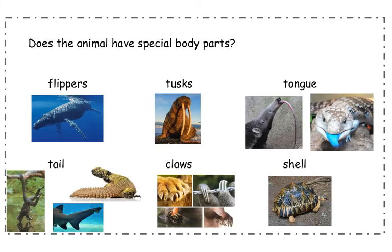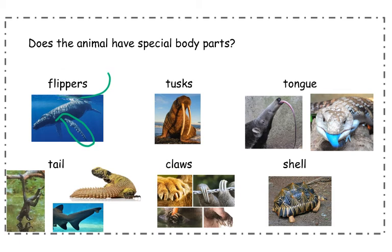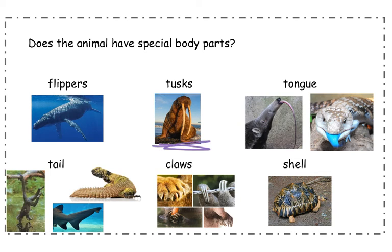Here are some more examples of special body parts. Flippers — some animals have flippers, also called fins. On a penguin they would be called flippers; on a whale they would typically be called fins. They are used for swimming. Some animals have tusks — this walrus has very long tusks. Tusks are used for protection, but walruses can also use their tusks to help them hold on to the ice in the Arctic and climb up onto the ice as well.